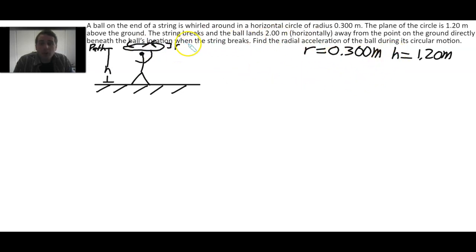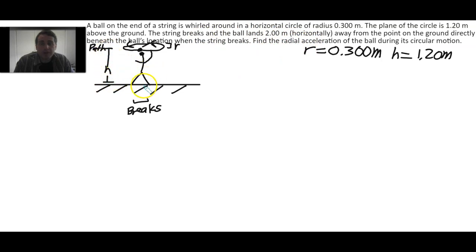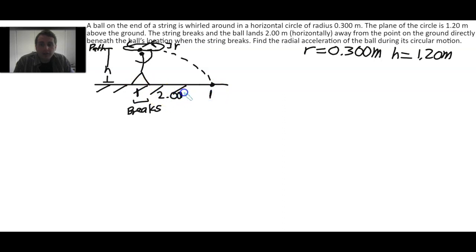The string breaks right here, and the ball is going to project horizontally away, moving 2.00 meters away. If this is 1.20 meters, the ball should take a trajectory something like so, continuing over and landing here. This distance from here to here is 2 meters. We'll call that delta x.